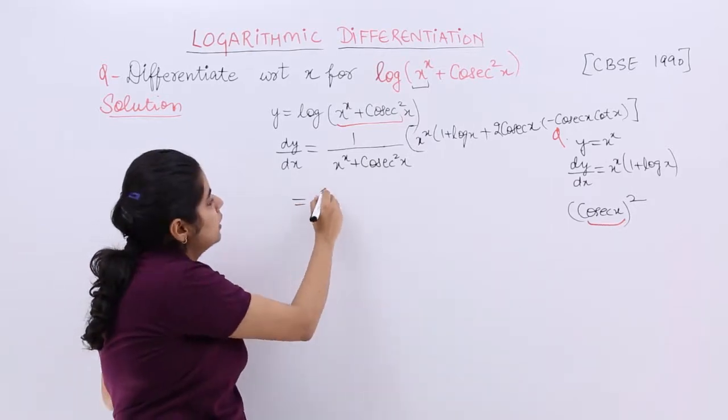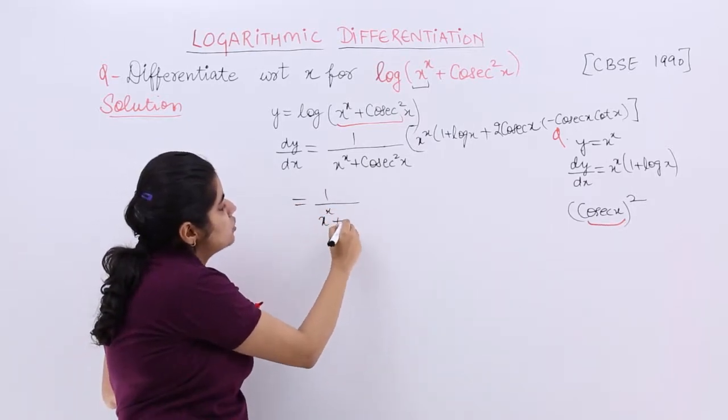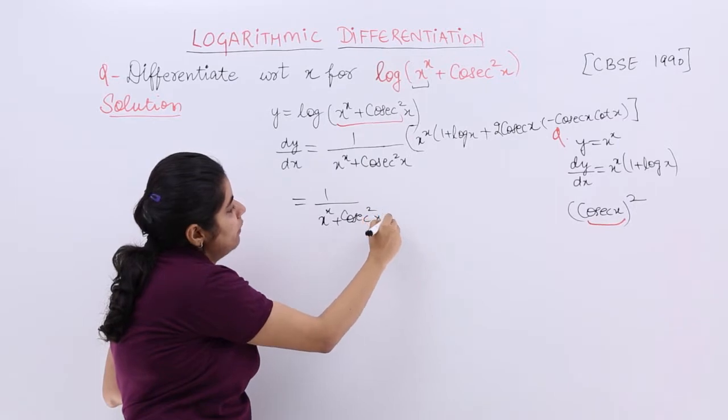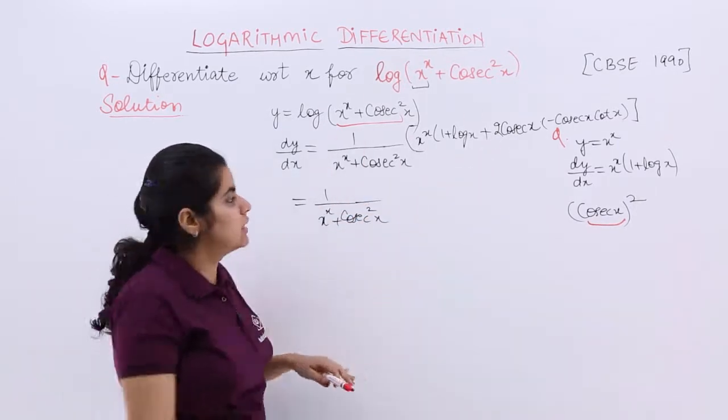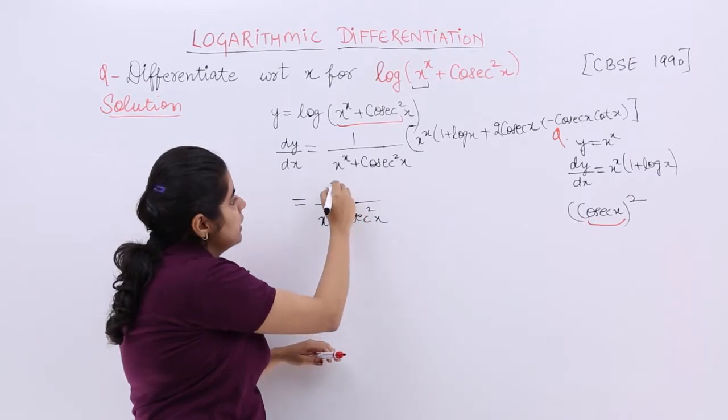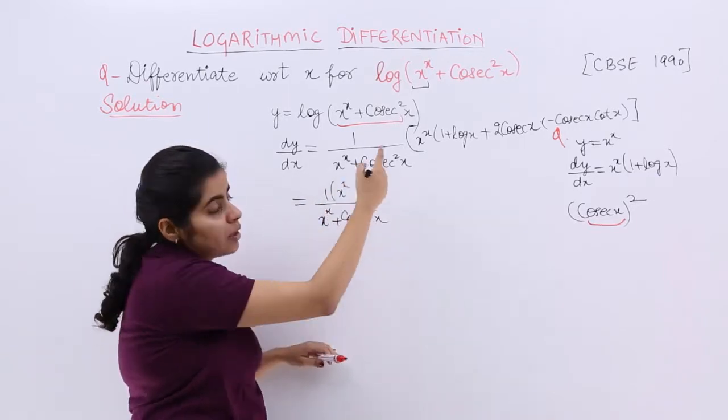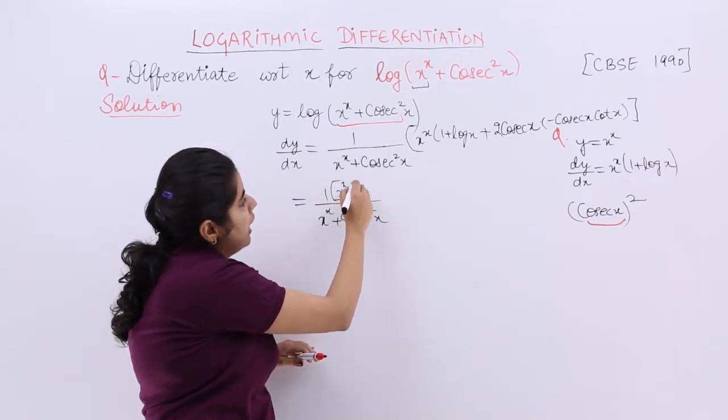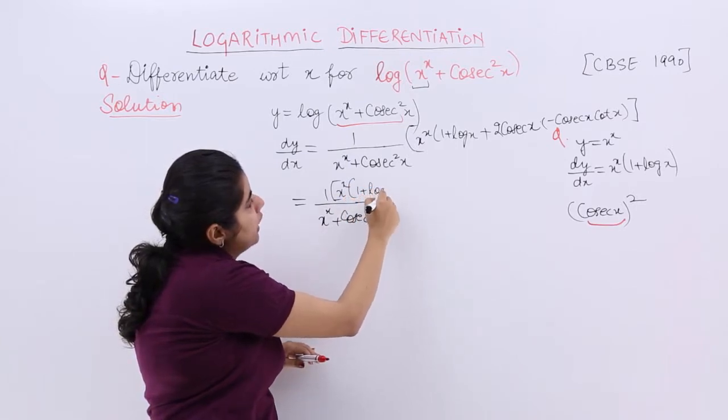You have to just put it in the correct order. So the answer is 1/(x^x + cosec²x). And rest things to be put here. So it is x^x. Let's write it here. And again we have 1 + log x.